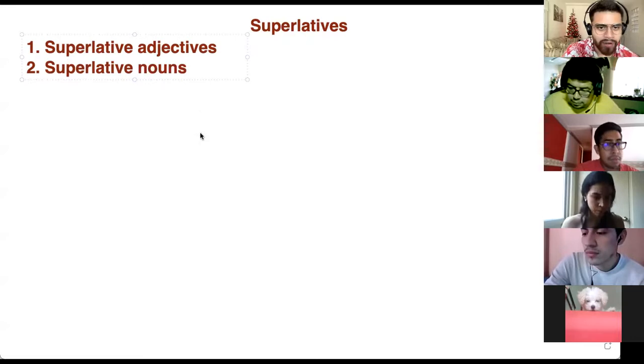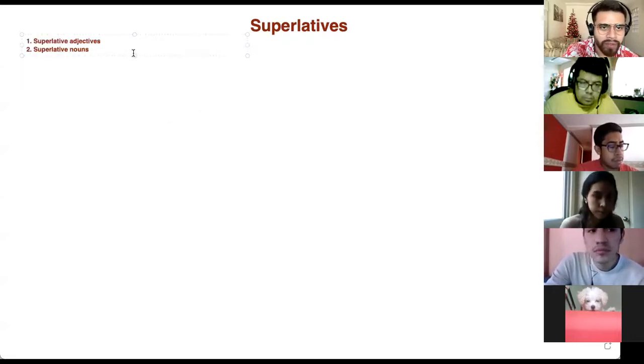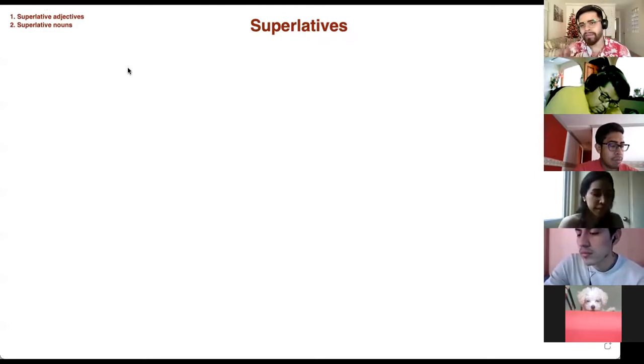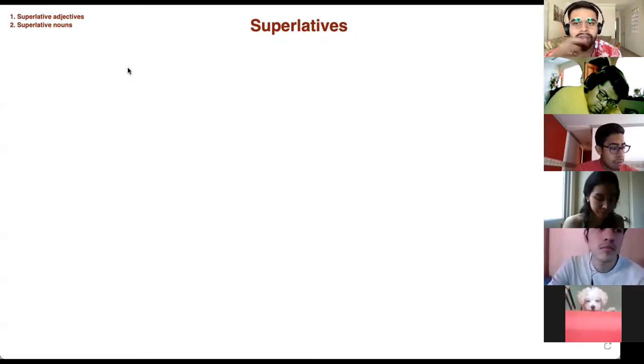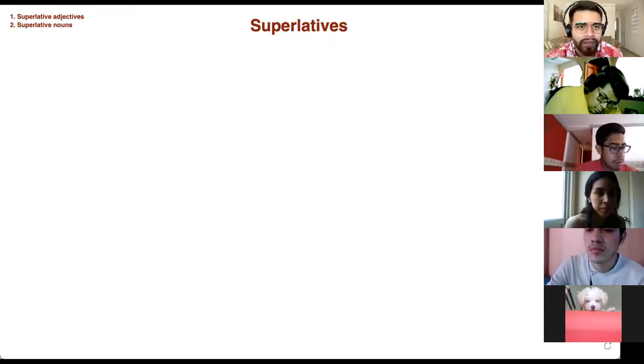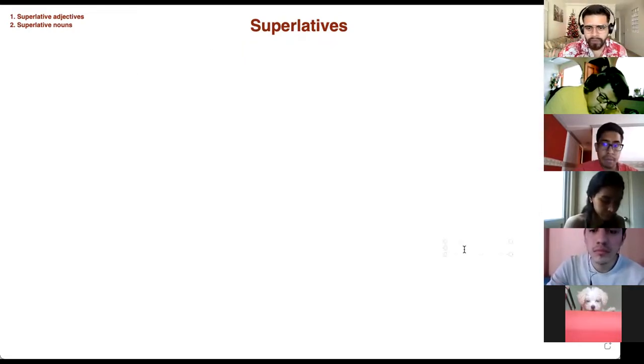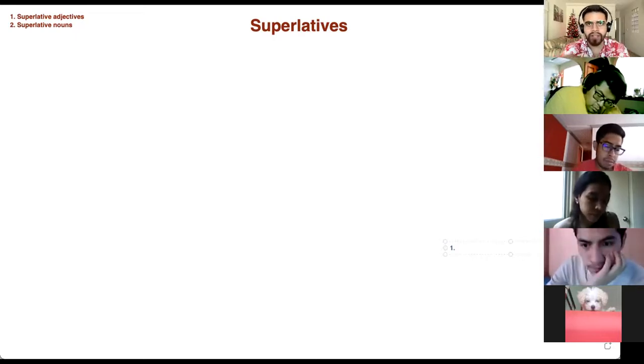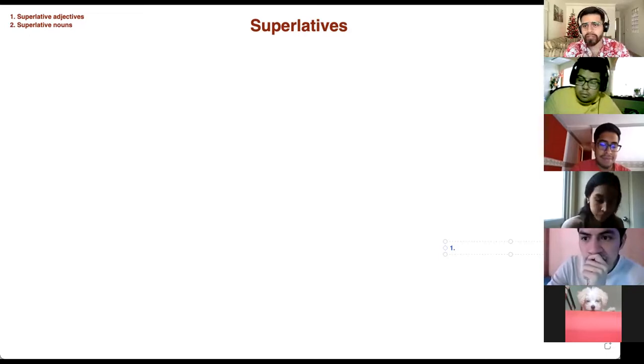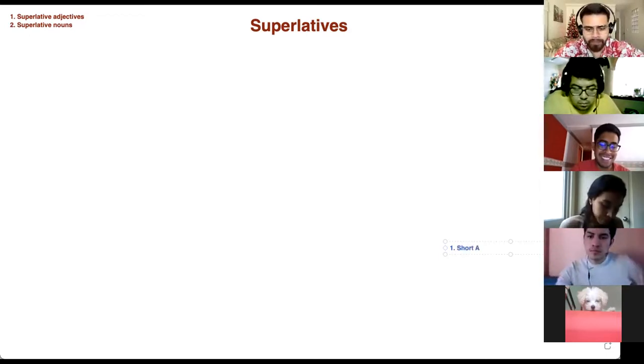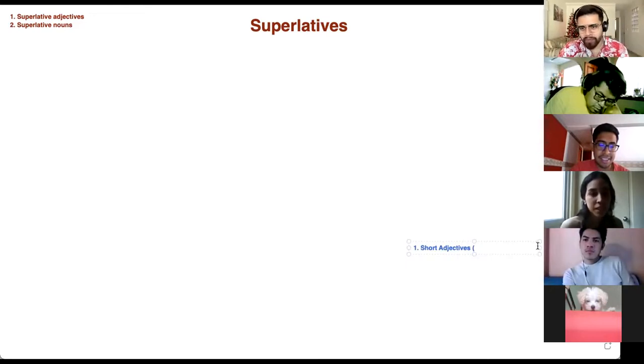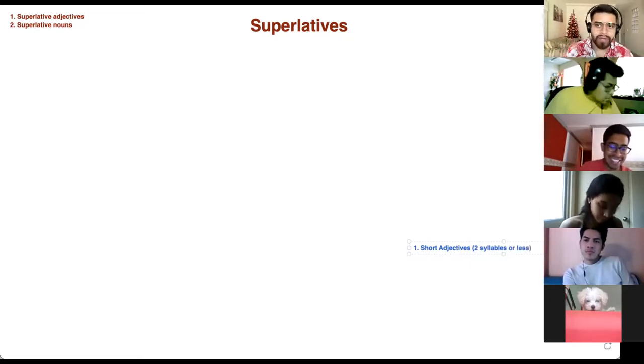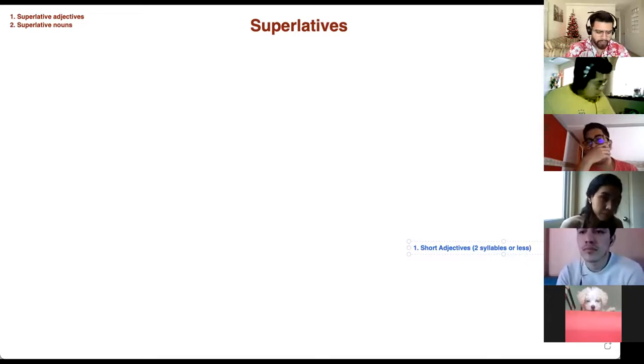The ones that are a little more complicated are the adjectives, so that's what we are going to begin with. Superlative adjectives. Now, before I begin explaining what a superlative adjective is, there are three things that you need to know. The first thing you need to know is what a short adjective is. And short adjectives are what many people consider two syllables or less.